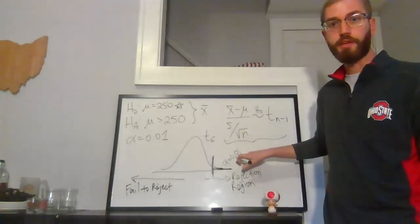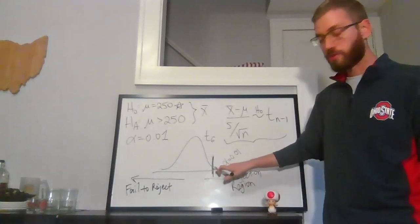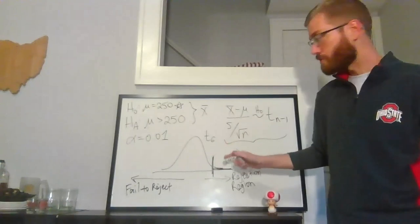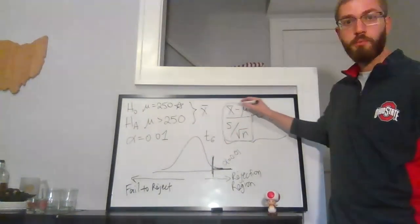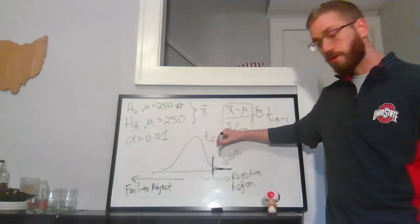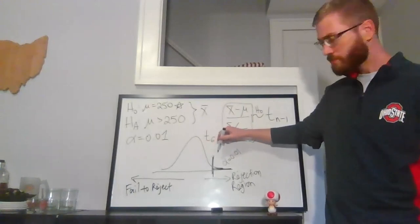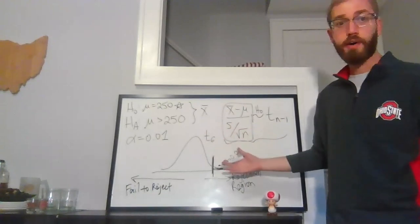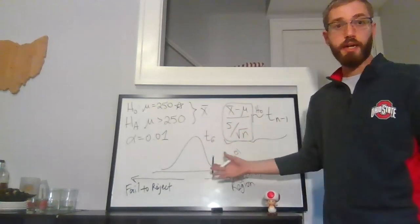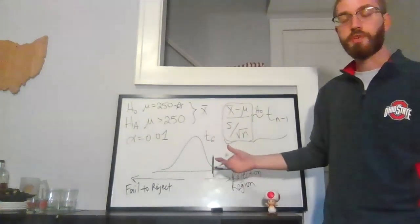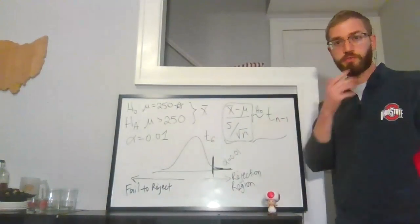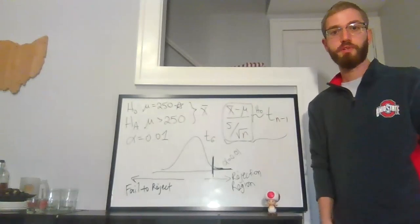This line tells me exactly where my rejection region begins. I'll compute the statistic (x-bar minus mu) divided by s over square root of n — call it t_observed. If it falls on the left side I fail to reject; if it falls on the right I reject the null. The cutoff is the 99th percentile of a t_6. Take a moment to sketch this picture if you need to, because it will be helpful as we compute the actual numbers.